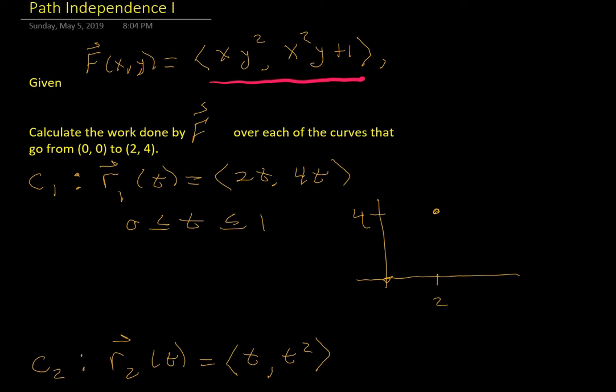The first path here is linear, 2t, 4t, and the time is from 0 to 1 for that. We've been practicing, so you should pause if you need to practice how that happens.